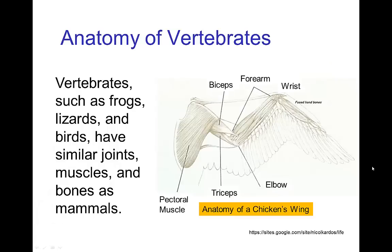That was just for mammals, but in fact all vertebrates have fairly similar joints, muscles, and bones. Here we have a chicken wing, and you see the wrist and the forearm and the elbow, and so forth.